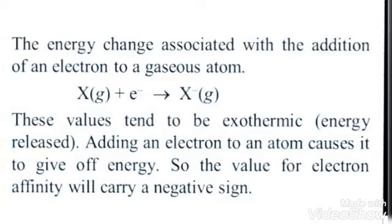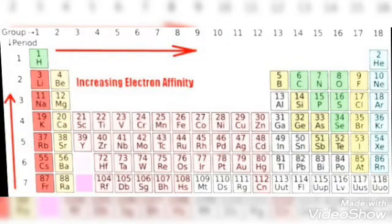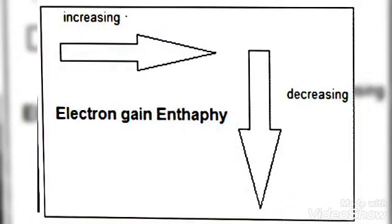Electron affinity is the amount of energy released when an electron is gained by an isolated gaseous atom. The amount of energy depends upon the number of electrons. Electron affinity increases in a period because atomic size decreases. With a decreased atomic size, an electron can be attracted easily with the release of more energy. In a group, it decreases because size is increasing — the nucleus cannot attract the incoming electron effectively. Therefore, a lesser amount of energy is released, so electron affinity decreases in a group from top to bottom, but increases in a period from left to right.